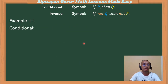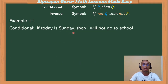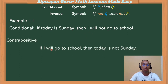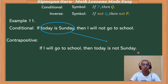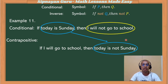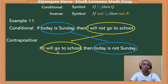Example number eleven: if today is Sunday, then I will not go to school. So the contrapositive: if I will go to school, then today is not Sunday. Our hypothesis is today is Sunday — this becomes our conclusion, negated as today is not Sunday. Our conclusion, I will not go to school — its opposite, I will go to school, becomes our new hypothesis in the contrapositive statement.